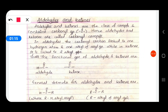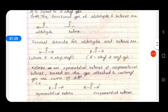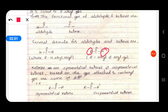Aldehydes contain CHO as functional group; ketones contain C double bond O as functional group. The general formula for aldehydes is H-C=O-R, where R may be hydrogen, an alkyl group, or an aryl group. In ketones, R must be an alkyl or aryl group — not hydrogen. If both R groups are the same, they are called symmetrical ketones; if different (R and R'), they are called asymmetrical ketones.